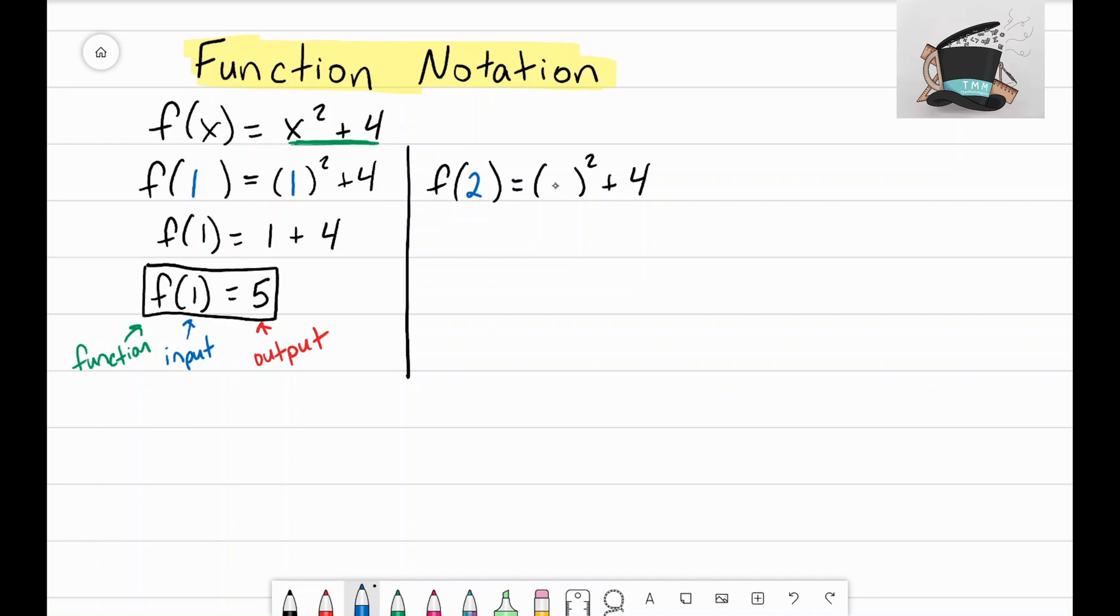Now let's go ahead and work this out. f of 2 equals, well, 2 squared is the same as 2 times 2 and 2 times 2 is 4. Bring down the plus 4, and 4 plus 4 is 8.